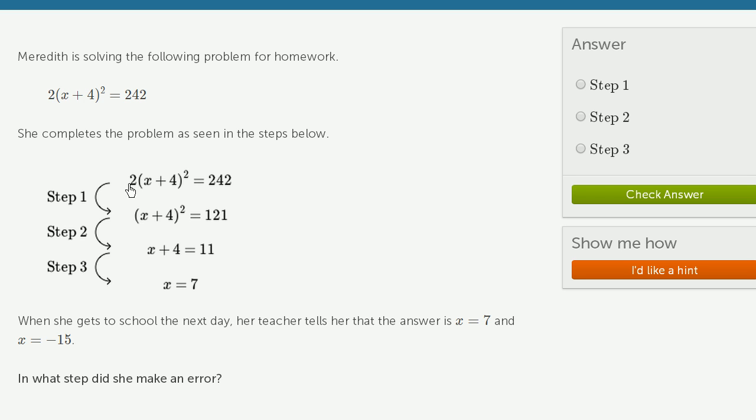So this first step, let's see. She got rid of this 2 by dividing the left-hand side by 2. And she appropriately divided—well, you can't just do that to one side. You have to do that to both sides in order to hold this equality. So she divided 242 by 2 as well. So that is correct. Step 1 makes sense.